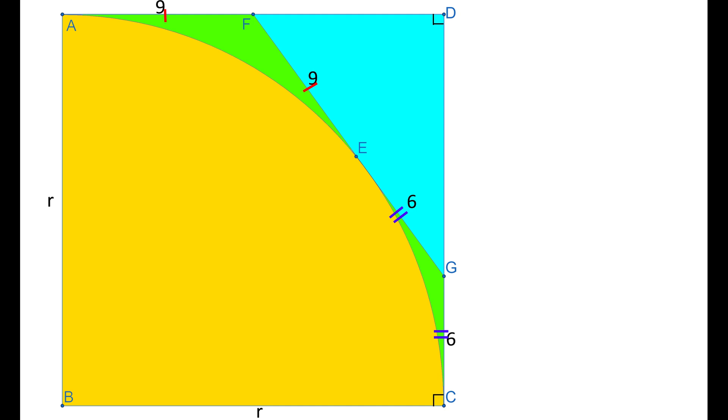Now, the hypotenuse of the triangle, FG, is 9 plus 6 equals 15 units. We can easily work out the length of the other two sides in terms of radius R.